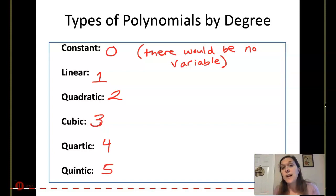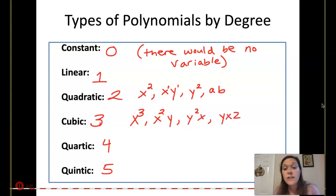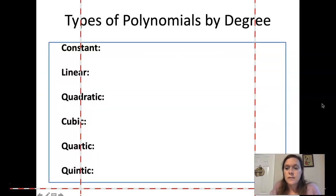Remember your degree comes from your exponents, but you could have variables attached together in a term and then add those exponents together. For quadratic, it could be x squared or x times y, because that's 1 and 1, which makes 2, or y squared, or ab. For cubic, it could be x cubed, or x squared y, because 2 plus 1 makes 3, or y squared x, or xyz. For quartic, you could have x to the fourth, x squared y squared, x cubed y, and all those different combos. The same thing applies with quintic.